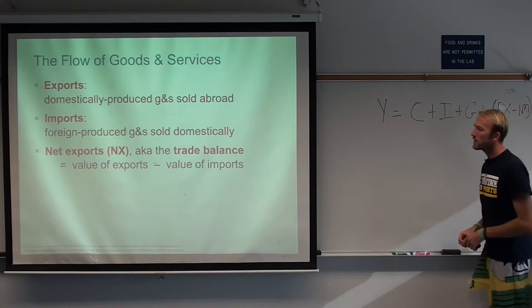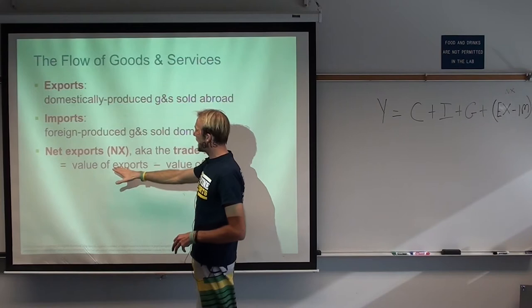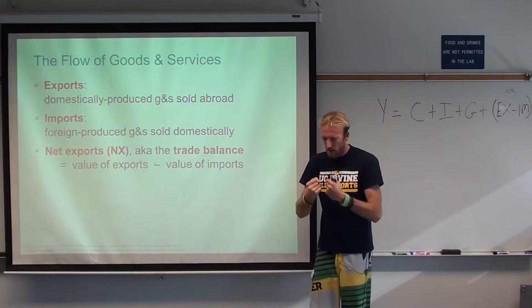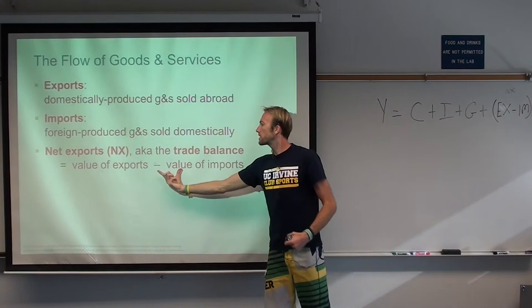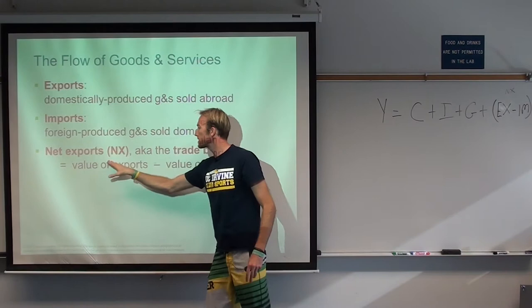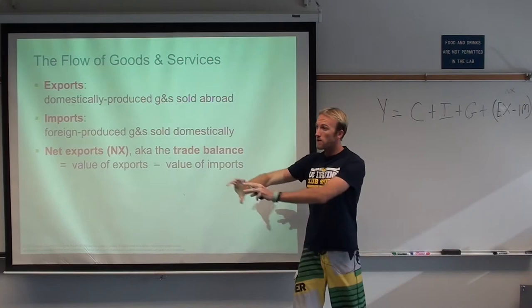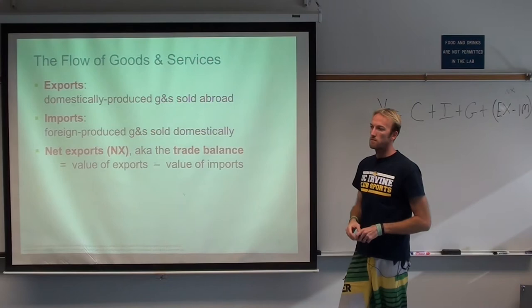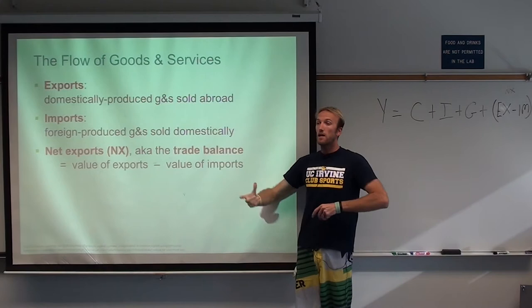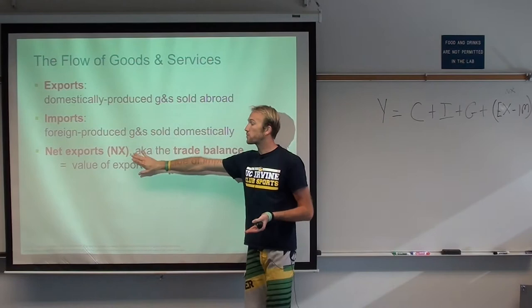If you export more than you import, this term is positive. If you bring in more than you export, net exports is negative. When exports and imports are the same number, net exports is zero — that gives us a trade balance. Think about the United States: you probably woke up this morning and drank coffee grown in Central America, used a cell phone made in China, and drove a car made in Japan. We import far more than we export, so net exports for the US is probably negative.